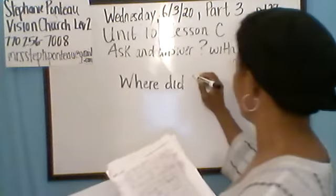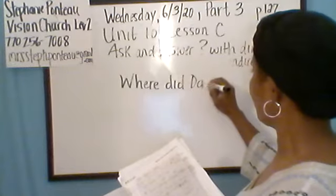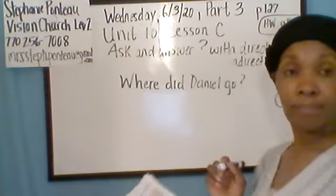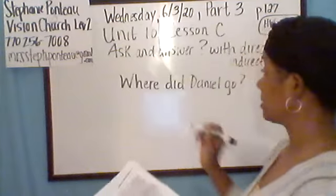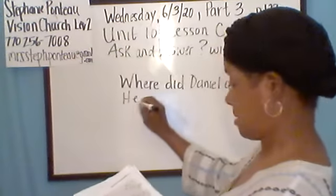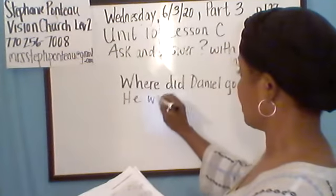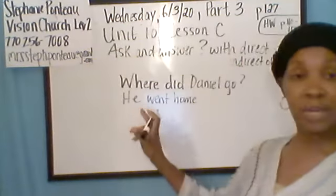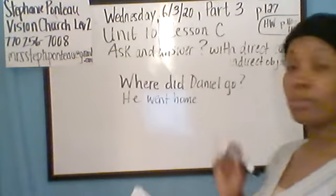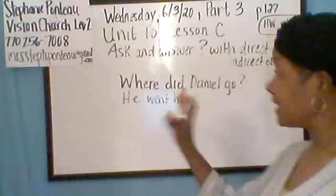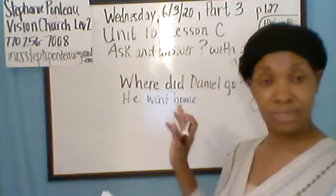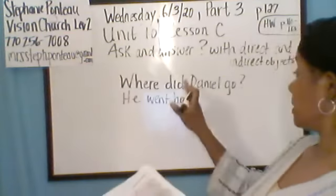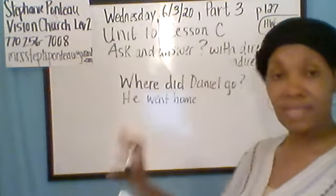Here's an example. Where did Daniel go? To answer that question: he went home. I use the pronoun 'he' because Daniel is a male. In this particular sentence, there are no objects — nothing is being given to anyone.